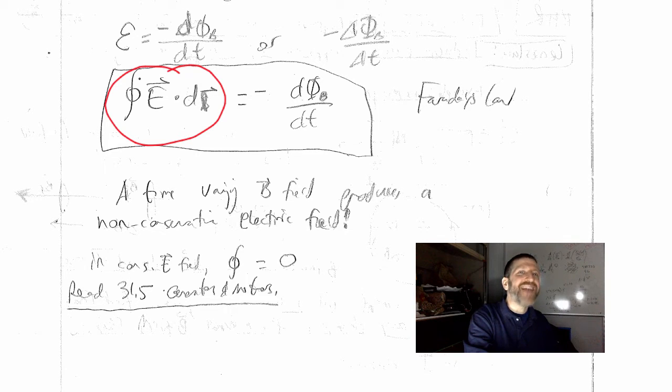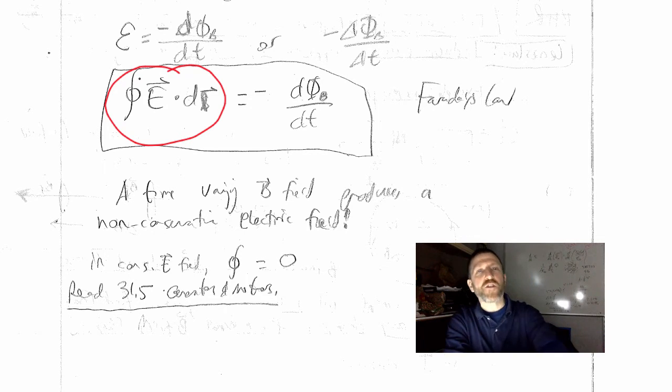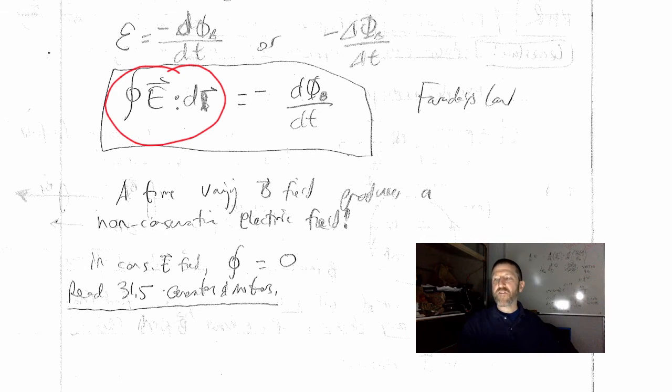But this is the non-conservative field that is created whenever you change the magnetic flux. You integrate that non-conservative field, dot it on the path length. I've used S in the past for that. I've now adopted the AP Physics equation sheet uses L integral, so I'm going to use that for this lecture.